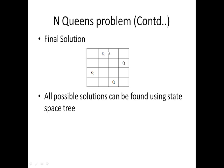Queen 1 is moved to position 1,2. The 2nd queen is placed at 2,4, the 3rd queen at 3,1, and the 4th queen at 4,3. Checking the constraints: for each queen, no other queen should be placed in the corresponding rows, columns, or diagonals. All four queens satisfy these constraints.